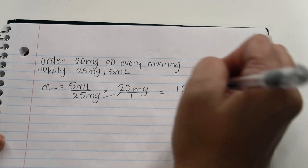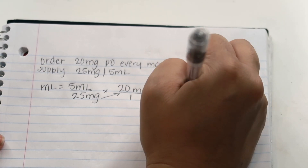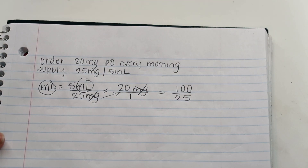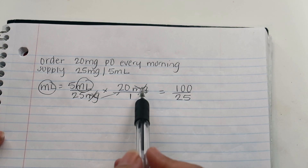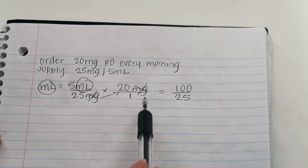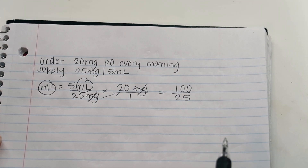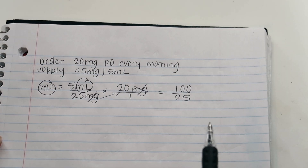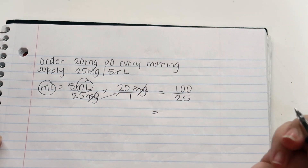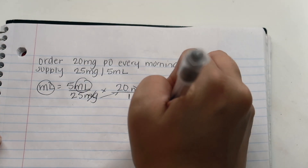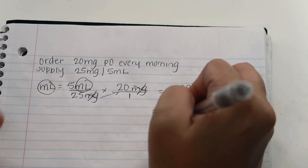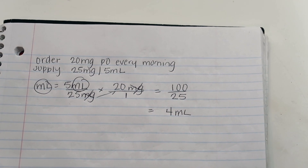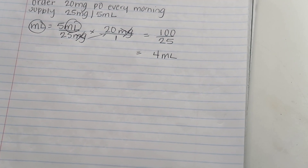Go ahead and cross out your units to confirm we have exactly what we're looking for. I recommend doing that before multiplying to ensure all units align. Multiply across: 5 times 20 is 100, and 25 times 1 is 25. Divide 100 by 25, and that gives us 4. We're looking for milliliters — so the answer is 4 milliliters per dose.